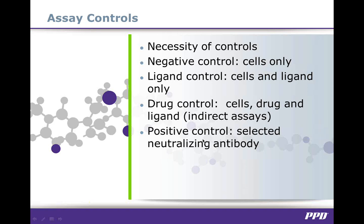The ligand control is added as part of indirect assays and evaluates the potential cell stimulation caused by the ligand in the presence of the sample matrix, with no drug products or drug-specific antibodies present. The drug control is used to assess interactions between the sample matrix, cells, ligand if appropriate, and the drug in the absence of antibodies. The identification of a positive control antibody capable of neutralizing the biological activity of the drug product is crucial. While antibodies from subjects who have tested positive for NABs are ideal, most positive control antibodies are produced in animals exposed to the drug product. Positive control antibodies are used to assess assay sensitivity, defined as the lowest concentration of antibodies detectable using the optimal drug concentration, cell density, and ligand concentration in the case of indirect assays.